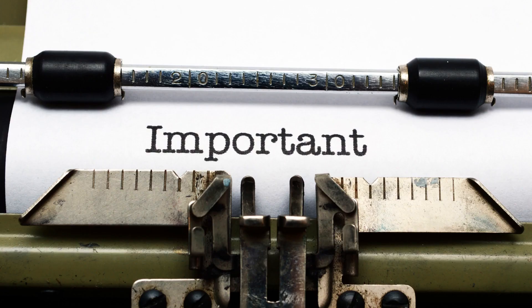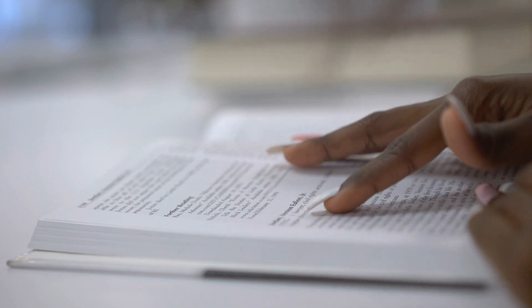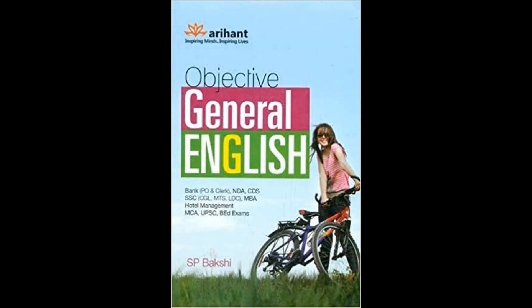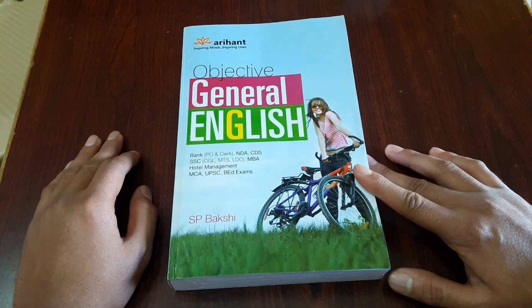For IBPS Pre, the most important topics are reading comprehension, para jumble, error spotting, cloze test, sentence improvement, and fill in the blanks. For these topics, General Objective English by S.P. Bakshi is most important and enough for preparation.